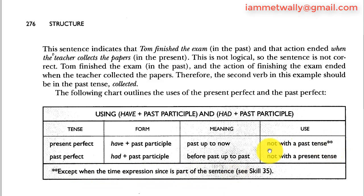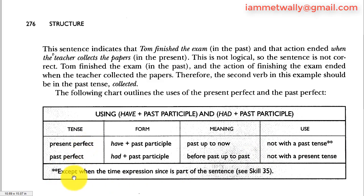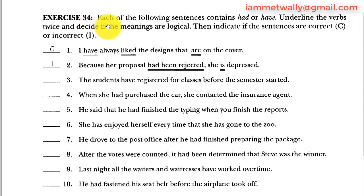The two asterisks in the chart show there is an exception: you can use the present perfect with the past tense when the word 'since' is present. For example: 'I haven't seen him since we met last year.' In this case, the word 'since' expresses the meaning of 'up to now.'